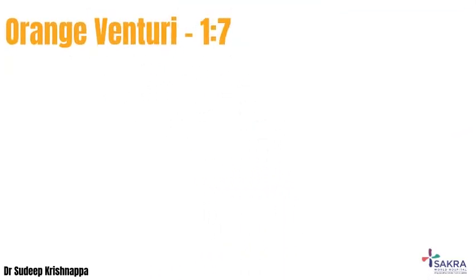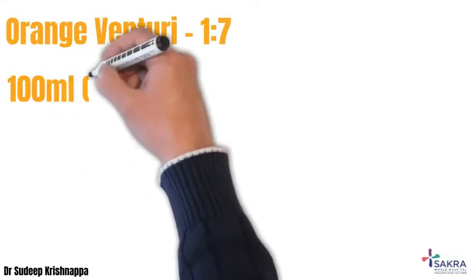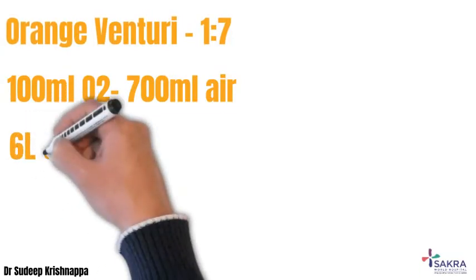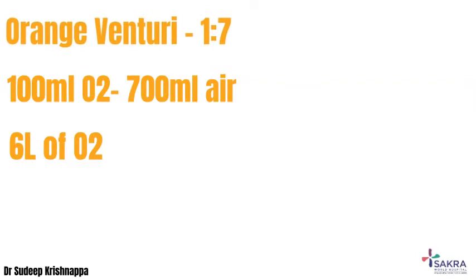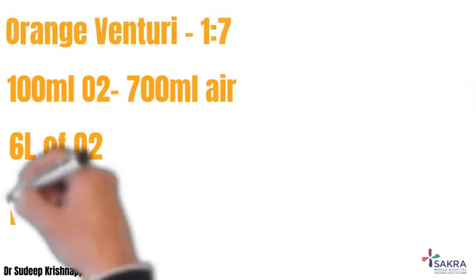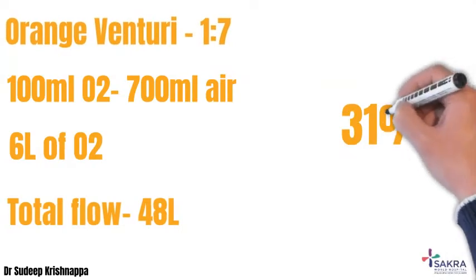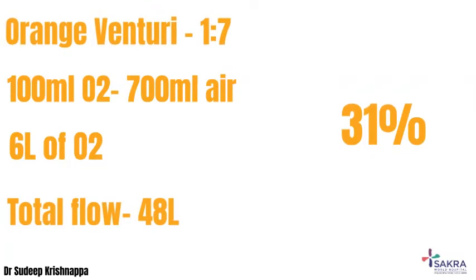The orange venturi has an entrainment ratio of 1:7. For each 100 ml of oxygen flowing through the device, about 700 ml of room air would be entrained, generating a total volume of around 800 ml. With the recommended flow rate of 6 liters of oxygen, another 42 liters of room air would be entrained, generating a total flow of 48 liters. In the mixture: 100 ml of oxygen gives 100 ml of oxygen, while 700 ml of air gives 140 ml of oxygen — totaling 240 ml of oxygen in 800 ml, which translates to an FiO2 of 31 percent.